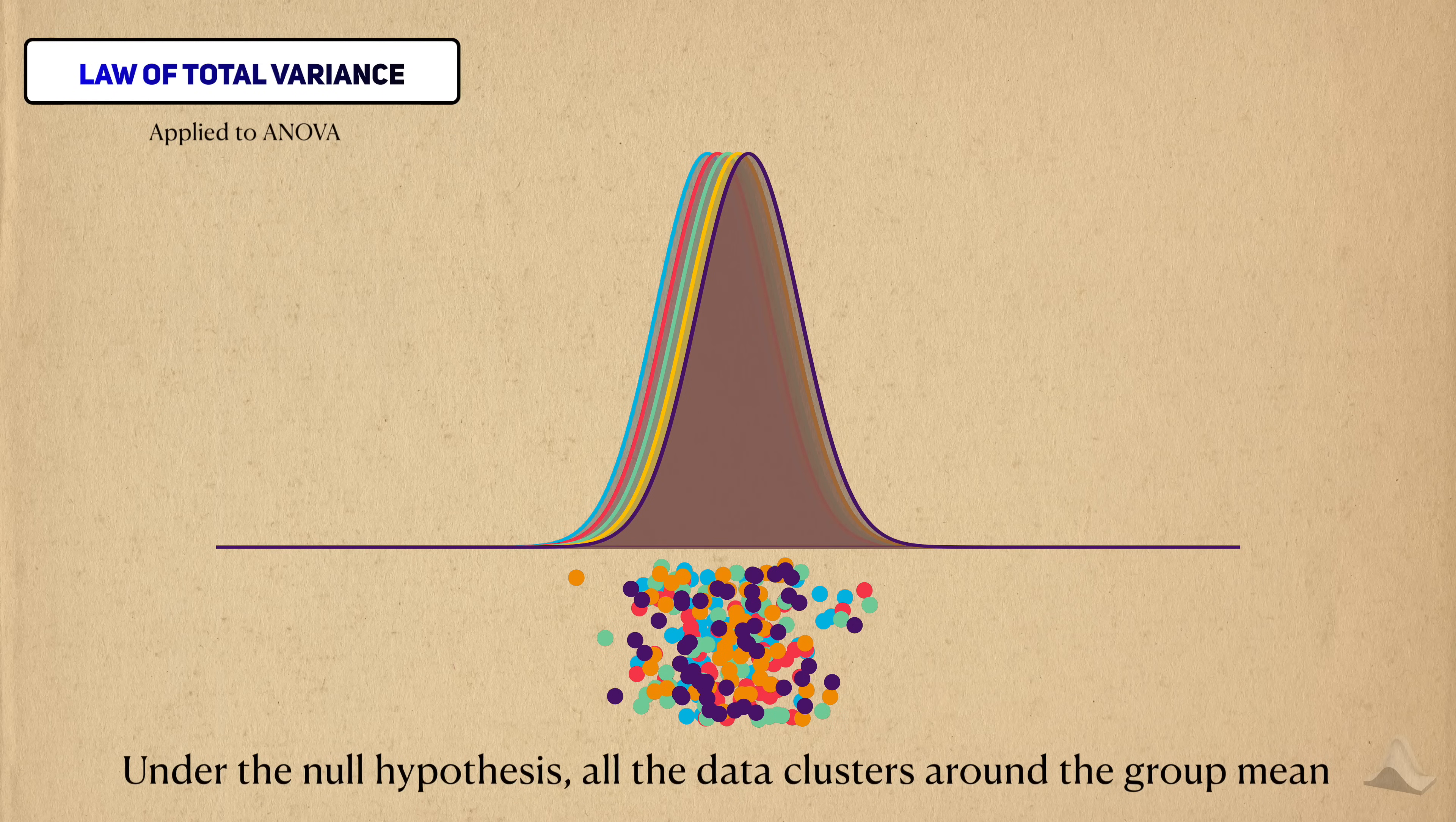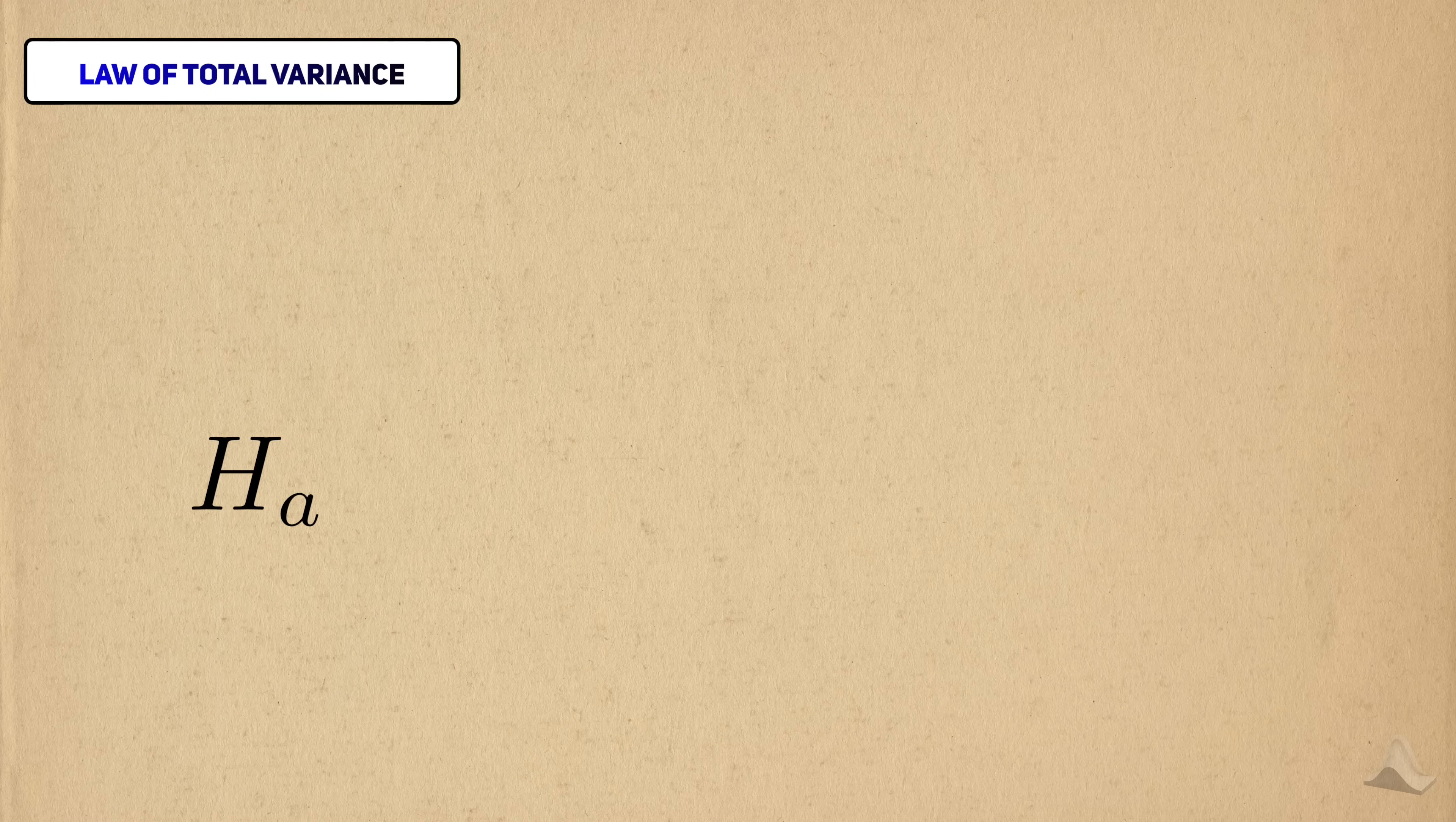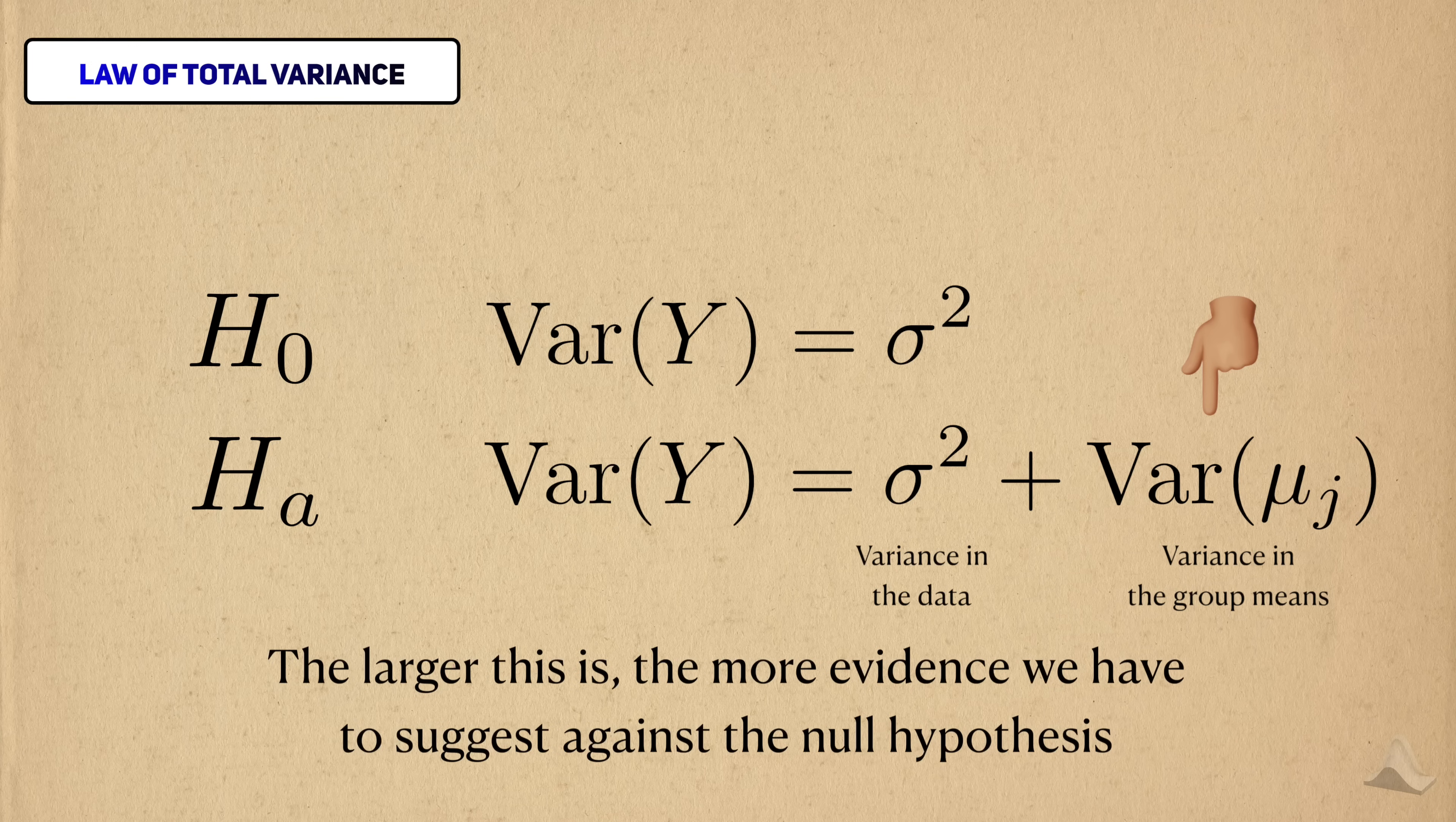Under the null hypothesis, all the data will cluster around the shared group mean, and this forms one extreme. At the other extreme, all of the groups have distinct means. In this case, we'll see that the variance of the outcome will be much larger overall. Sometimes you hear this phrase as variance explained, which refers to how the different locations of the group means cause the outcomes to be more spread apart. So, under the alternative hypothesis, the total variance has two terms. One is the variance in the data, and the other is the variance of the group means. The second term is what helps us distinguish between the null and the alternative hypotheses, so the higher it is, the more likely it is that the null hypothesis is incorrect.